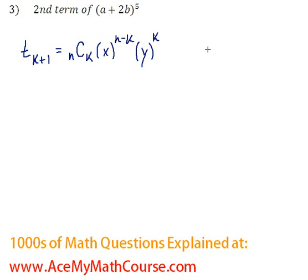Don't forget that nCk is n factorial over k factorial times (n - k) factorial.